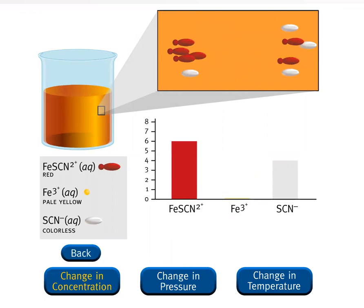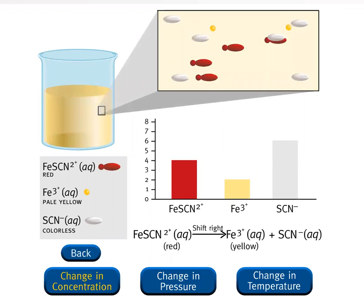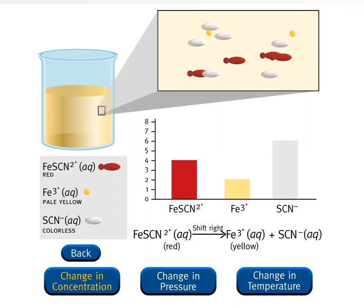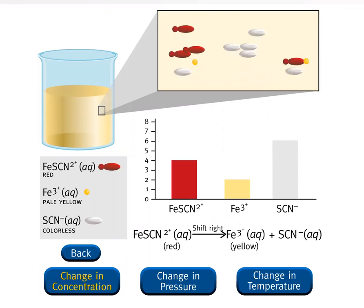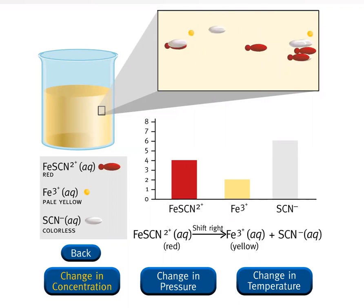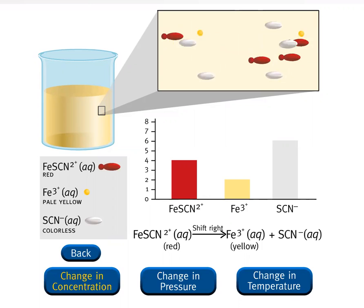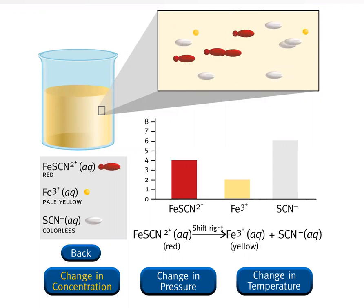Oxalic acid ionizes in water to form the oxalate ion C₂O₄²⁻, which binds strongly to the iron 3-plus ions. Free iron 3-plus ions are removed from the solution as the stable yellow ion, iron 3-oxalate, is formed. The system shifts from left to right to replace some of the iron 3-plus ions. As the system shifts to the right, the concentration of iron thiocyanate ions, Fe(SCN)²⁺, decreases. The red solution turns yellow due to the decrease in concentration of the red Fe(SCN)²⁺ ions and the formation of the yellow iron 3-oxalate ions.